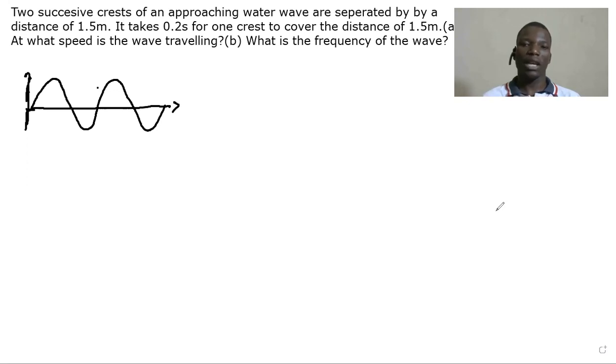So the question reads: Two successive crests of an approaching water wave are separated by a distance of 1.5 meters. It takes 0.2 seconds for one crest to cover the distance of 1.5 meters. Question (a): At what speed is the wave traveling? And (b): What is the frequency of the wave?